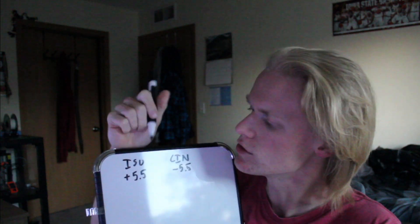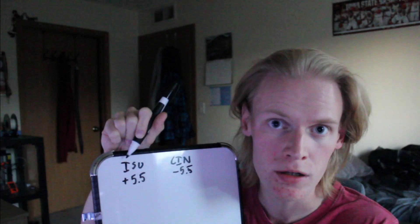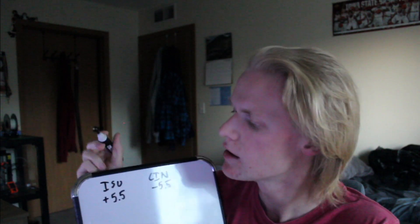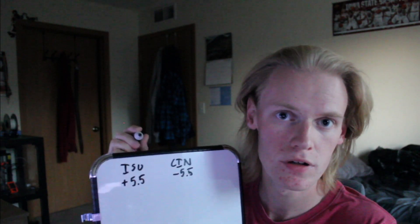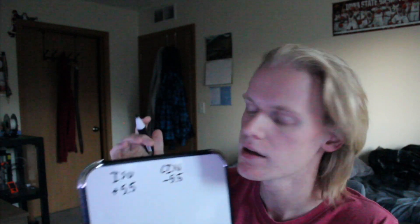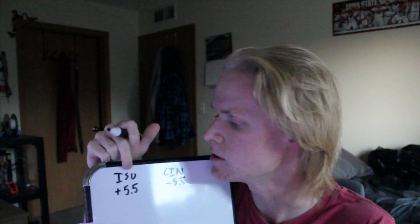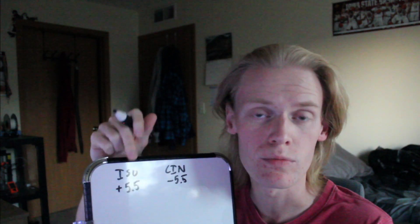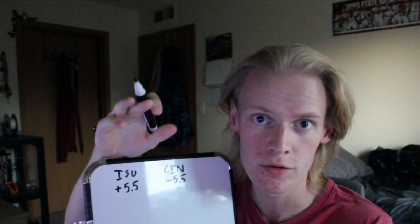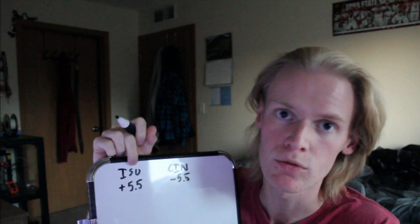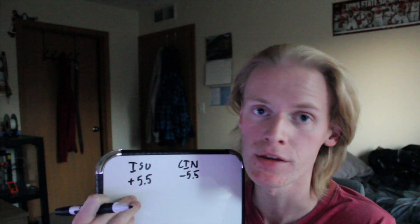You can think of the plus as: ISU will not lose by more than five and a half points. That can be confusing at first, so we'll go through a couple examples. With a plus, you're betting or picking that this team will not lose by more than this value.